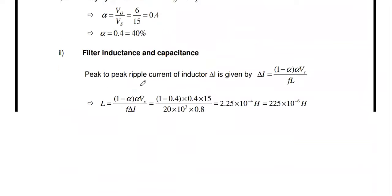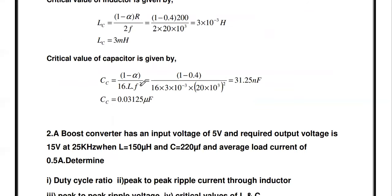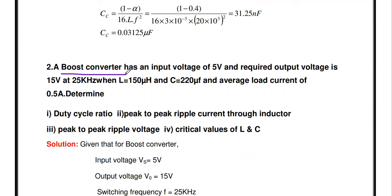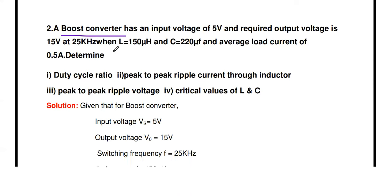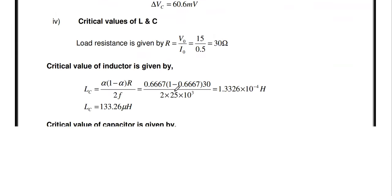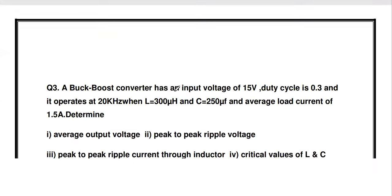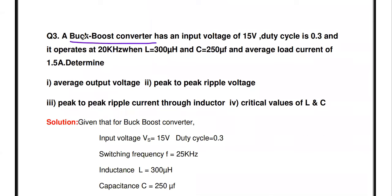The next converter is called a boost converter. Boost converter means it is a step-up converter — it converts lower voltages into higher voltages. For example, 5 volt can be converted into 10 volt. The third type is the buck-boost converter, which is a step-up/step-down converter. The same converter can act as both a step-up and step-down converter depending upon the duty cycle value.